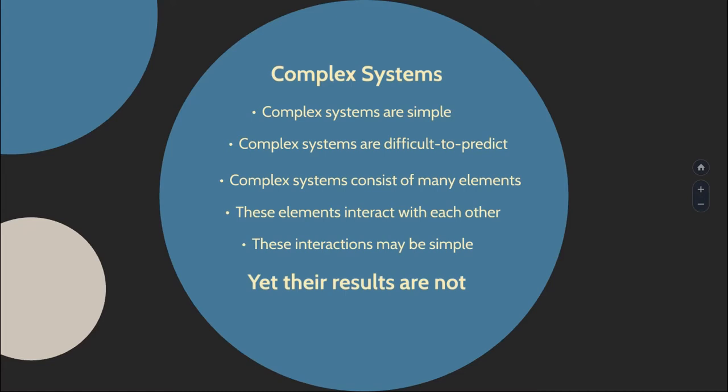The most obvious example of a complex system is human society. It consists of many elements—humans—who interact with each other. Those interactions may be pretty simple: communication of ideas, passing information from one person to another, or getting together and forming a household. Those interactions don't necessarily have to be complex, but the results—the patterns we have in economy and social changes—are very difficult to predict and not obvious from just looking at the characteristics of the people or entities that make the system.